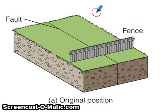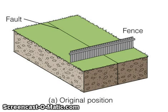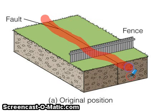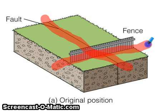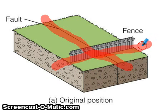Hello everybody. We're going to be examining how elastic rebound works and how it produces an earthquake. In this first picture you can see a fault dividing two masses of rock, and of course this fence going across it to give us a linear object as a reference.